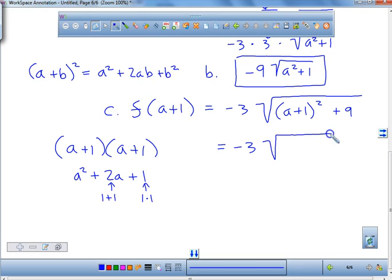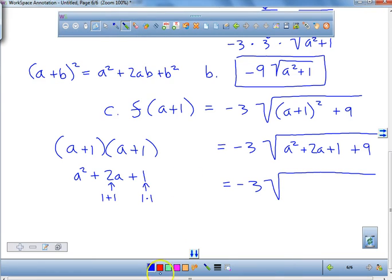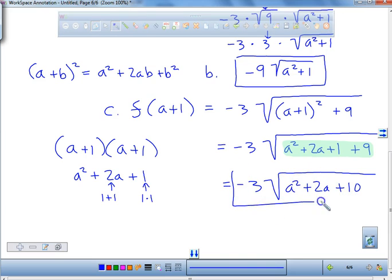So we have negative 3. What was a plus 1 squared? That became a squared plus 2a plus 1, and then we added a 9 at the end. Now all you have to do is ask yourself, can I simplify this any more than it's been simplified? We can't factor this, nothing can come out. So at this point this would be your final answer for the c portion of number 11.